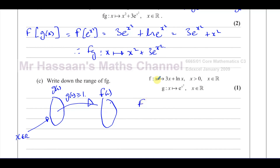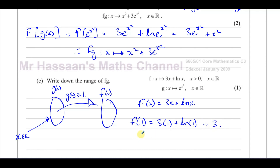So what goes into F(X) = 3X + ln X is only values X ≥ 1. The lowest value that can go in is X = 1. When we put X = 1 into F: 3×1 + ln(1) = 3 + 0 = 3. So F(1) = 3. If you put in higher values like 2, 3, or 4, you get bigger values than 3, and it keeps increasing. So the range of FG is FG(X) ≥ 3.